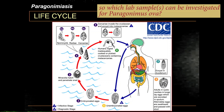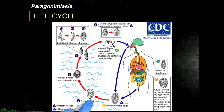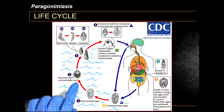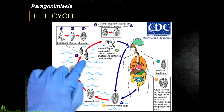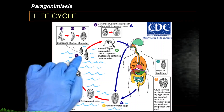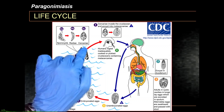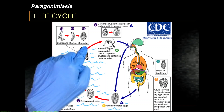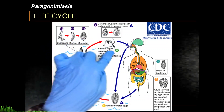Once outside, the unembryonated egg becomes embryonated usually in the presence of fresh water, and the miracidia hatch and swim to find the first intermediate host, the freshwater snails. Inside the freshwater snails, it develops into cercariae, which leave to find the second intermediate host — crayfishes, prawns, or crabs.